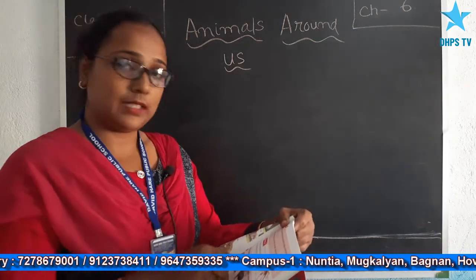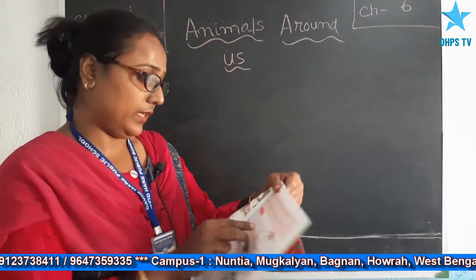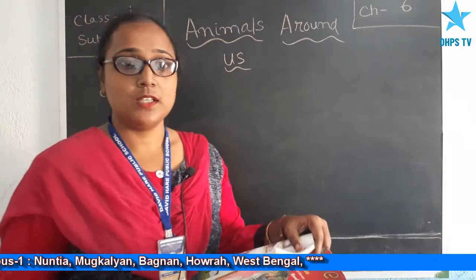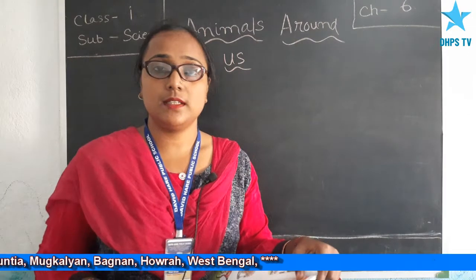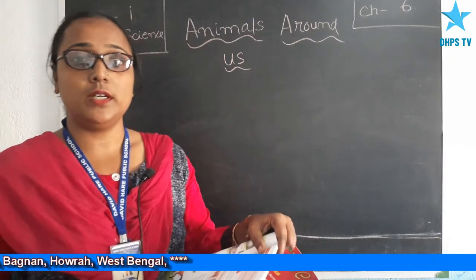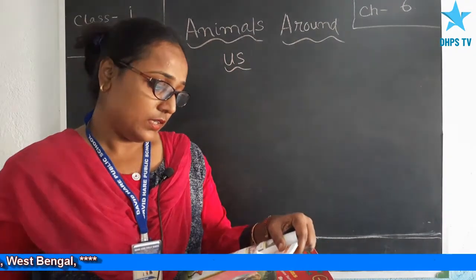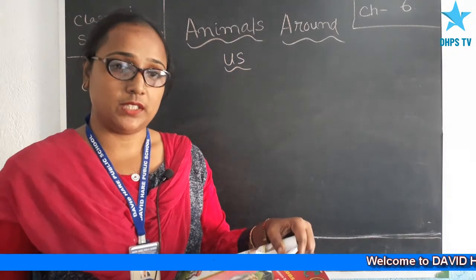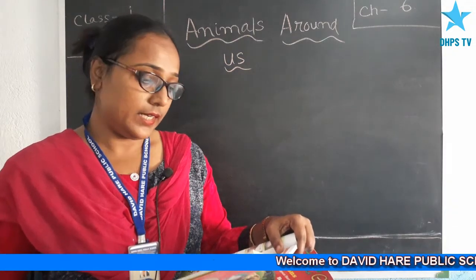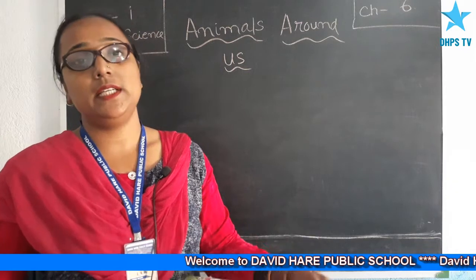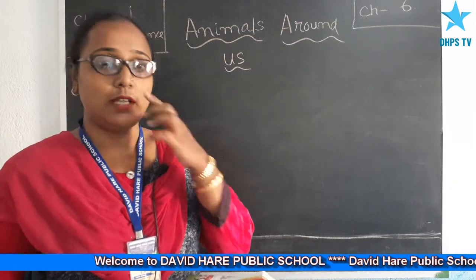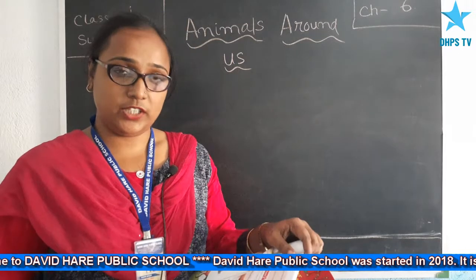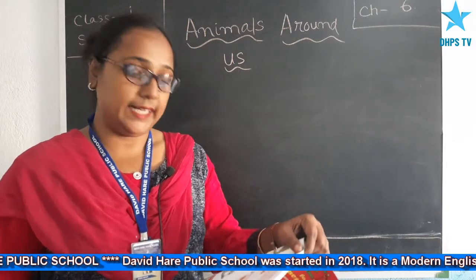Now here is some general knowledge. The giraffe is the tallest animal in the world. The octopus is a sea creature which lives in the sea and has 8 legs. Most sea creatures do not have so many legs, but the octopus is a sea creature with 8 legs.